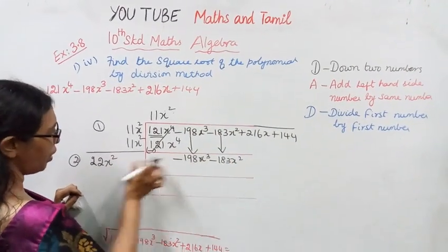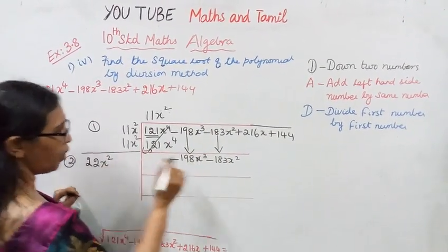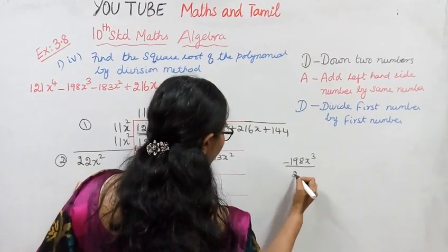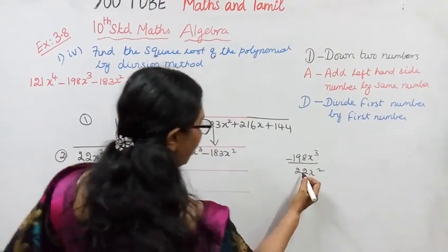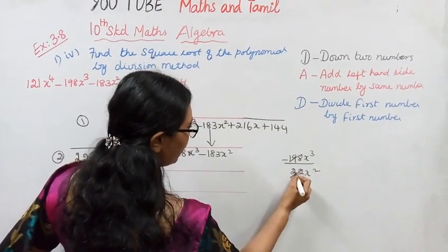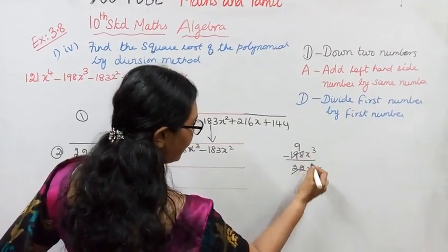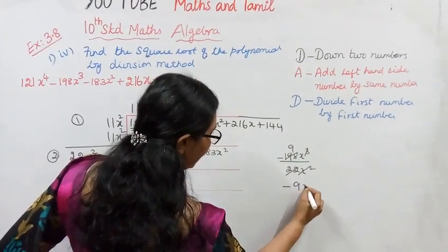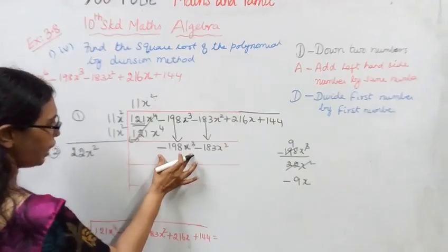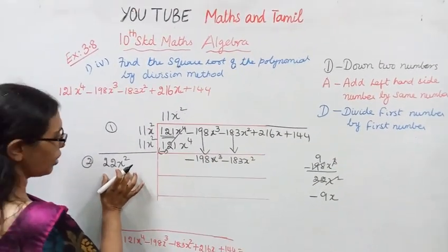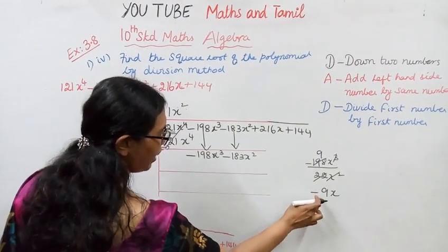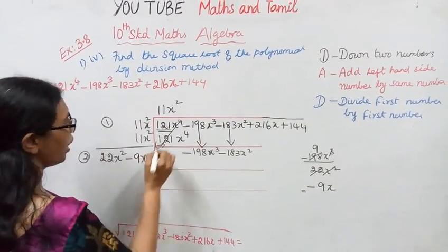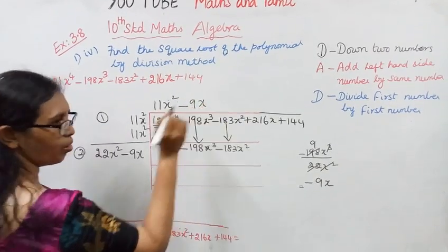First number, first number, divide. -198x³ divided by 22x². x³ divided by x² is x.